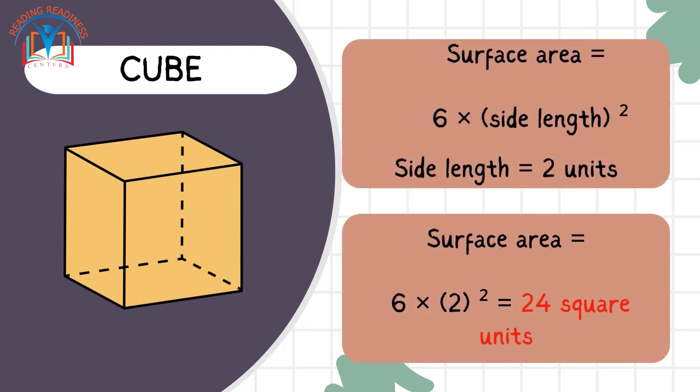Let's take a cube with sides measuring 2 units. The formula for surface area is 6 times the side length squared. So, it's 6 times 2 squared, giving us a total of 24 square units.